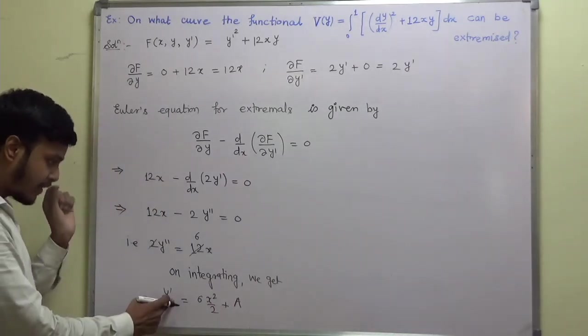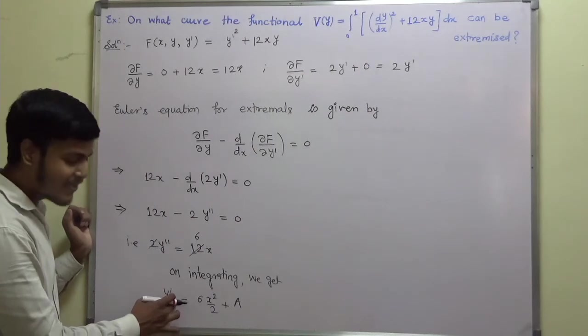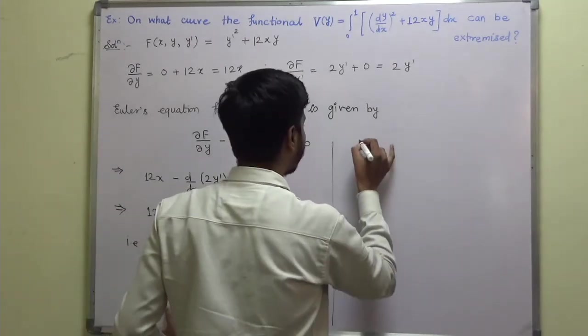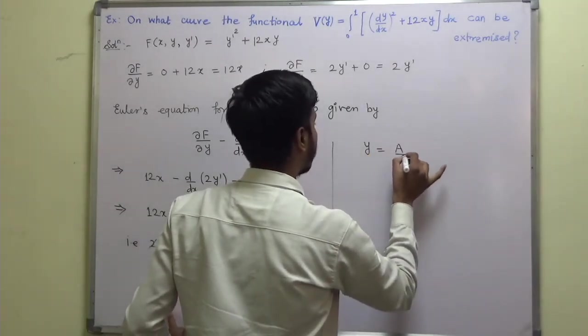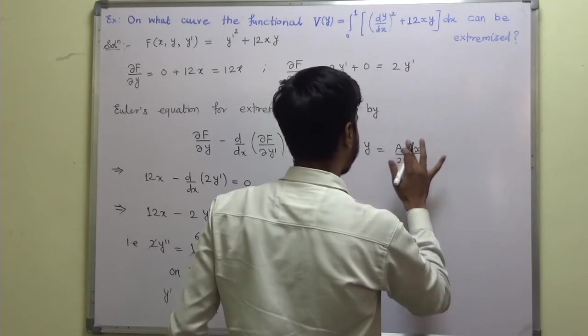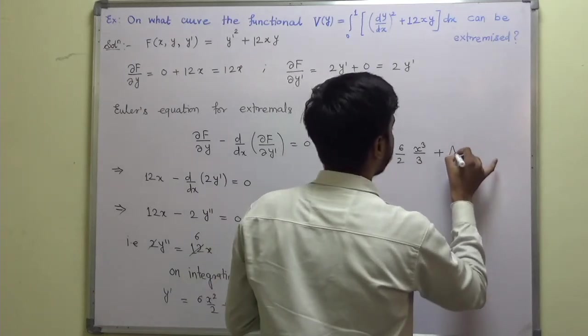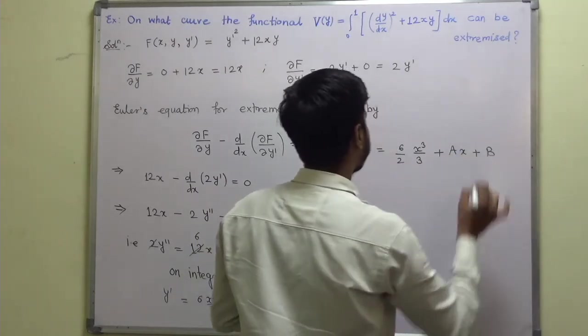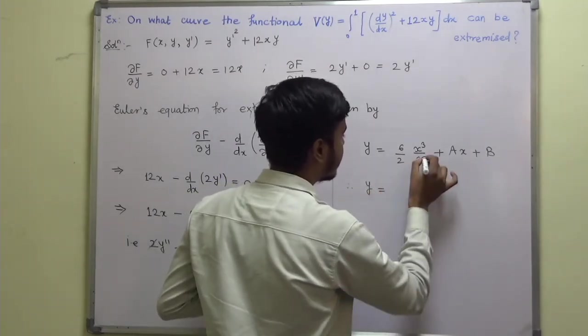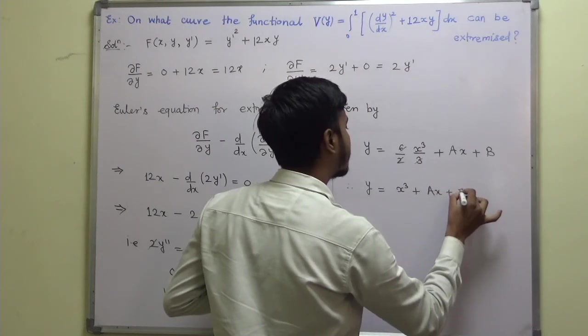Now again, we have one derivative. We need y. So to remove this derivative, we need to integrate it again. So on integrating again, we get y is equal to 2x³ plus a into integration of 1 is x plus b. So here you can see, I got the extremal or the curve like this, 2x³ plus ax plus b.